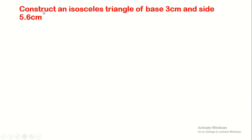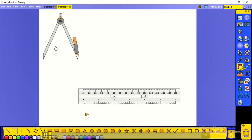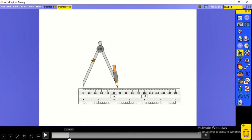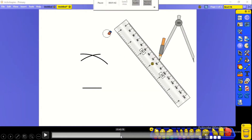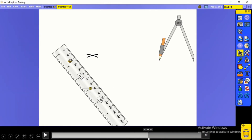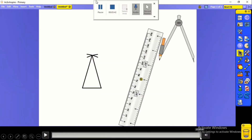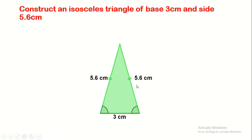To construct an isosceles triangle with base 3 centimeters and side 5.6 centimeters: since isosceles triangles have two equal sides, both equal sides are 5.6 centimeters. We start by drawing the base of 3 centimeters. We open the compass to 5.6 centimeters and draw the first arc, keeping the same opening to draw the second arc. We join the intersection of the arcs with the extremities. We mark the two equal sides as 5.6 centimeters, the base as 3 centimeters, and indicate the equal base angles.